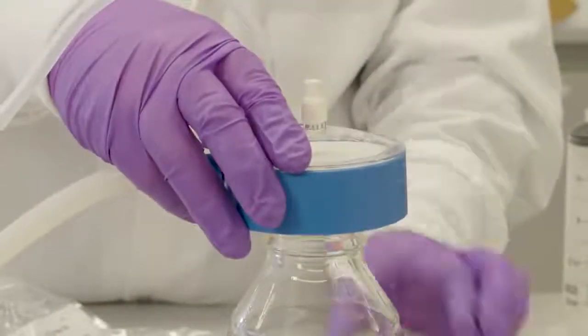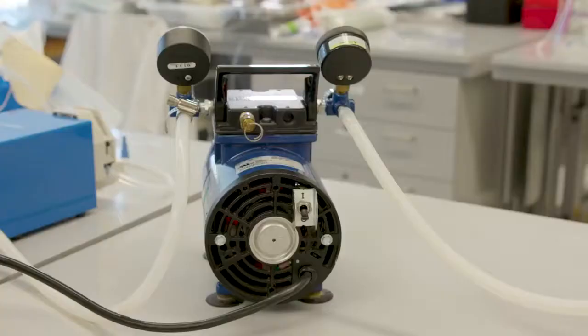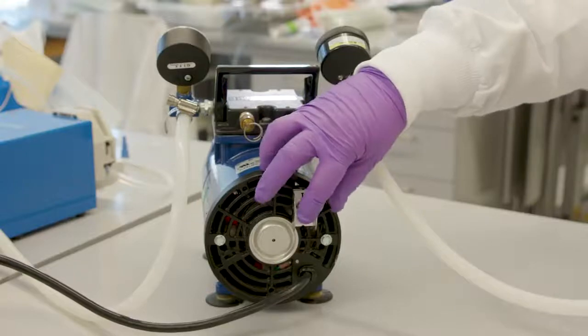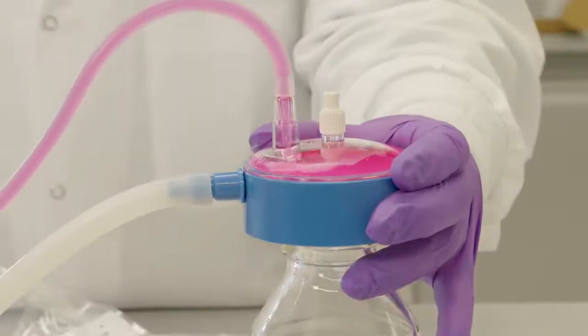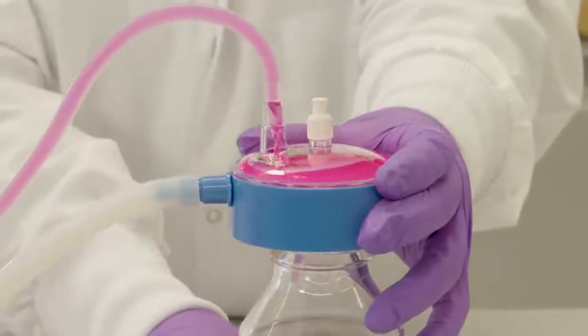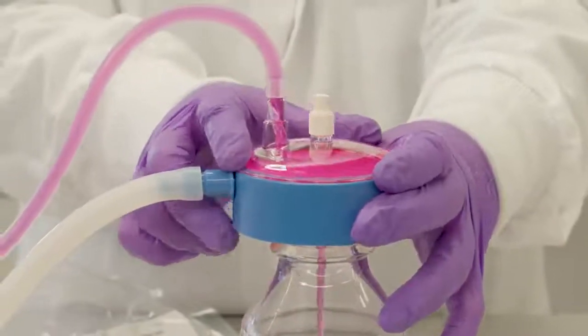Hold the SteriCap Plus onto the top of the receiver bottle and turn on the vacuum to begin filtration. Continue holding the unit until the vacuum source secures the filter unit into place and the flow starts into the receiver bottle.